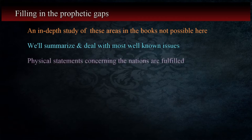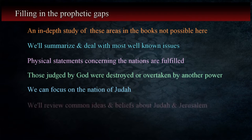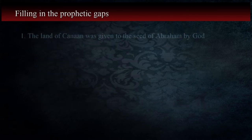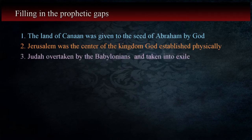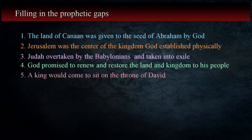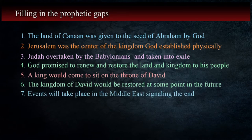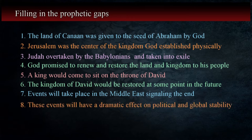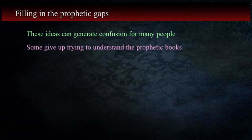As I noted in the previous lesson, the physical statements concerning the nations have been fulfilled — those judged by God were destroyed or overtaken by another power. With that in mind, we can focus primarily on Judah as the subject of the bulk of the prophecies. We'll start by reviewing common thoughts, perceptions, and beliefs concerning Judah and Jerusalem. These can be summarized as: the land of Canaan was given to the seed of Abraham by God; the city of Jerusalem was the center of the kingdom God established physically; the Jews were overtaken by the Babylonians and taken into exile; God promised to renew and restore the land and kingdom to his people; a king would come to sit on the throne of David; the kingdom of David would be restored at some point in the future; events related to this will take place in the Middle East signaling the end, with a dramatic effect on political and global stability. These ideas muddy the water for many people and generate confusion, and some abandon trying to understand the language of the prophetic books altogether.